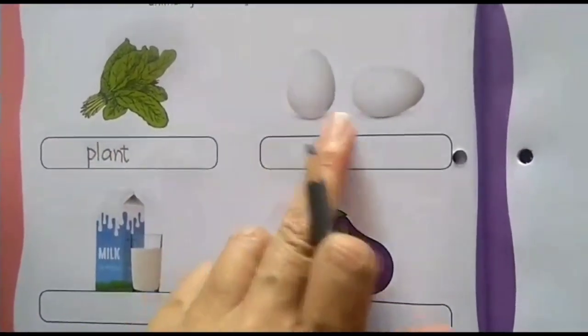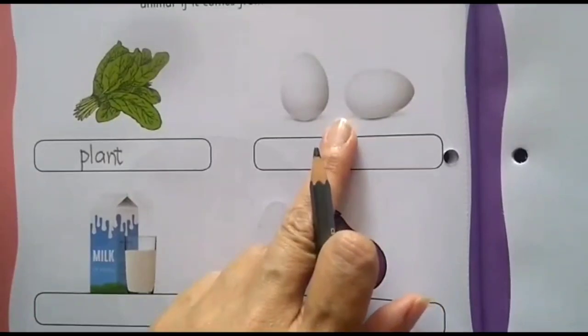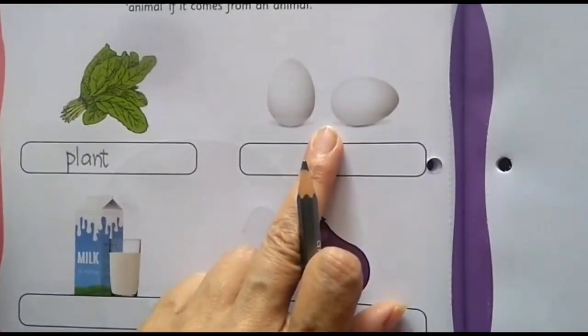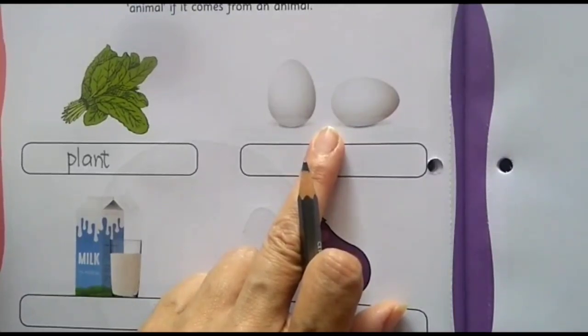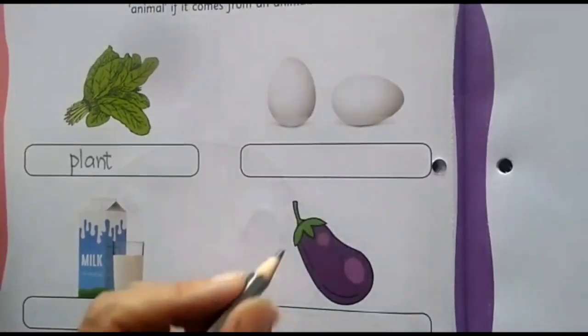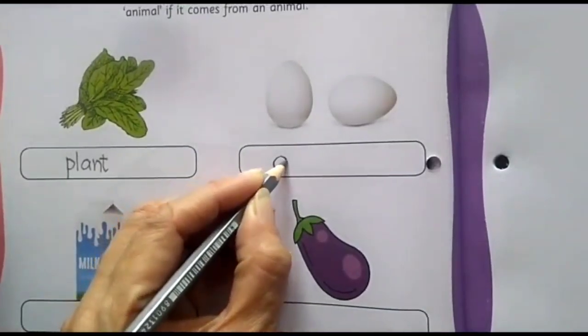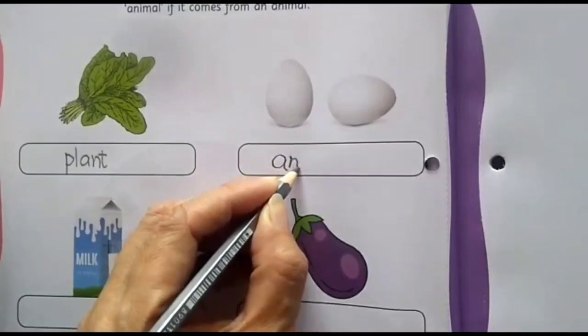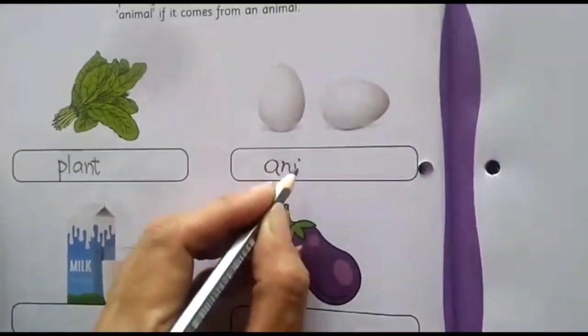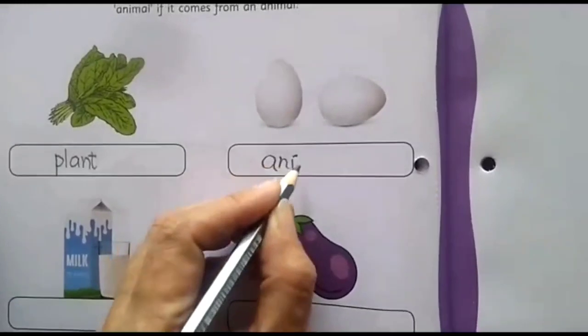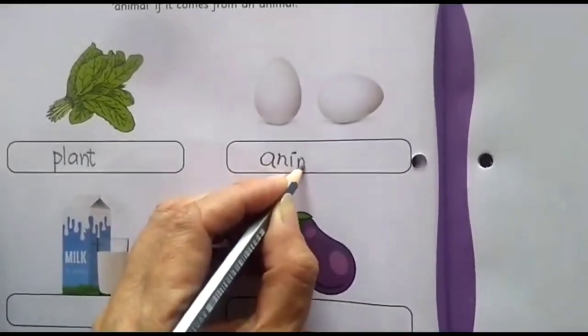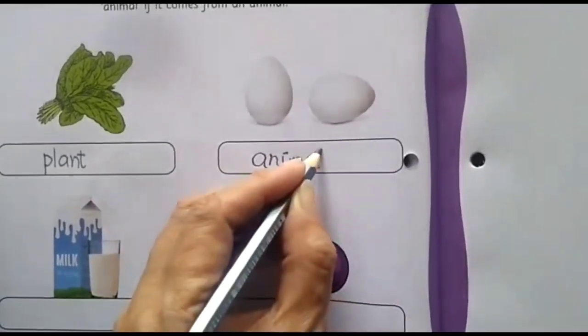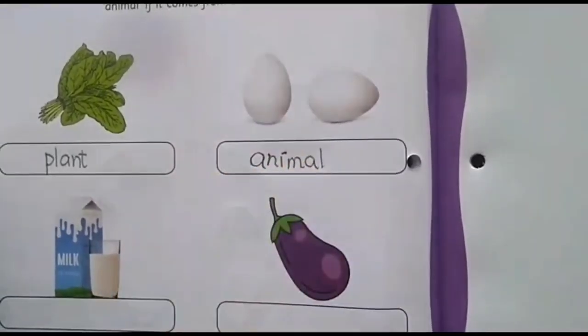Now, what can you see here? You can see eggs. From which source do we get eggs? From plants or from animals? I know your answer will be animals. So let us write it. The spelling you can see here. A-N-I-M-A-L. Animal.